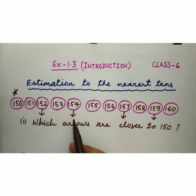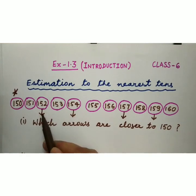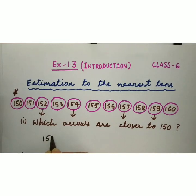Inme kaunse arrows 150 ke closer hain? To ham ne dekha 152 and 154. Ye dono arrows 150 ke zyadha close hain as compared to 157 and 159. We will write 152 and 154. They are more closer to 150.